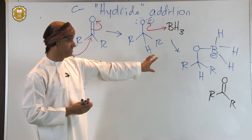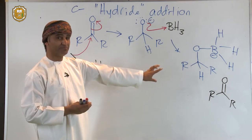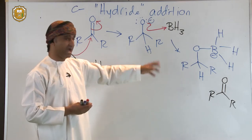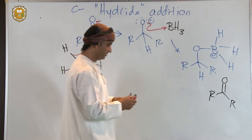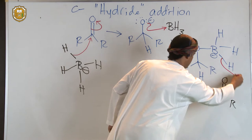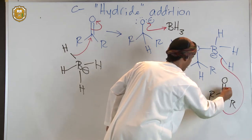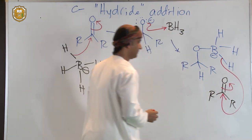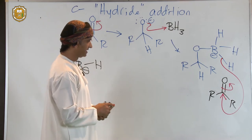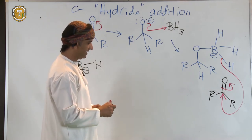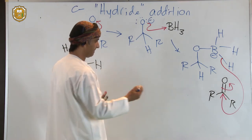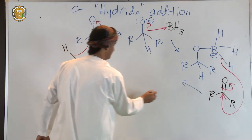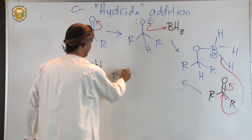So therefore, that intermediate will react with another mole of the ketone. And then another hydride transfer takes place. So something like this. And of course, the carbon-oxygen bond breaks up simultaneously. So what we can do now is we write the resultant product.